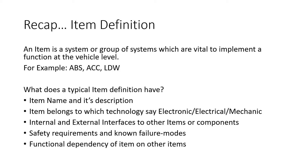I would like to recap or revise the item definition part. What exactly is an item? An item is a system, or a group of systems, which is very important to implement a function at a vehicle level. For example, the anti-lock braking system is one item, adaptive cruise control is one item, and lane departure warning is another item.